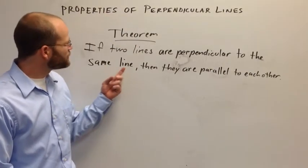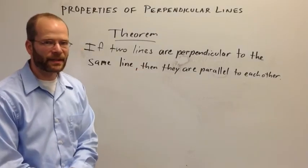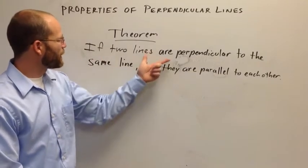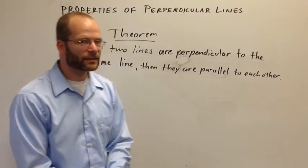Let's look at another theorem. This theorem says if two lines are perpendicular to the same line then they are parallel to each other. Notice again it's in the form of a conditional statement. If, then, hypothesis, conclusion. If two lines are perpendicular to the same line then they are parallel to each other.